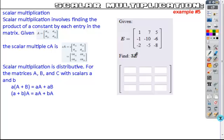So if you're looking at 3E, that means we're going to go in and everywhere there's a digit in here, we're going to multiply by 3 and that will be your new value.